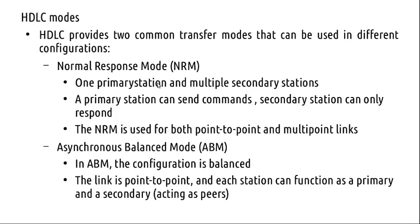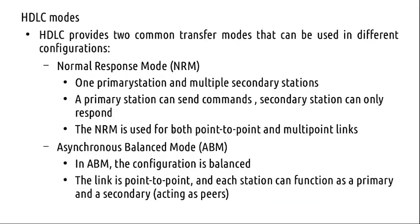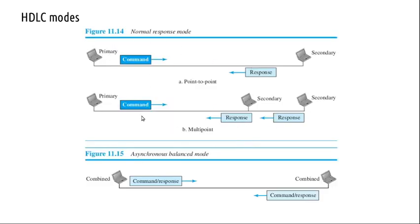HDLC provides two common transfer modes. One is Normal Response Mode and the other is Asynchronous Balanced Mode. In Normal Response Mode there is a primary and one or more secondary stations. The primary can send commands and receive responses; the secondary can only respond. Normal Response Mode is used for point-to-point and point-to-multipoint networks. The correct HDLC terminology is primary and secondary — similar to master-slave. In Asynchronous Balanced Mode, both primary and secondary functionality is present in the link, so each node can act as both primary and secondary, meaning it can send commands as well as give responses.